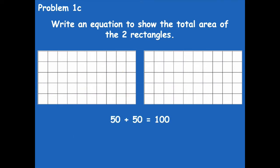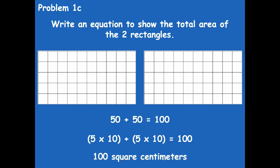You could come up with 50 plus 50, because the first rectangle we found the area for was 50 square units, so you could just double that. You also could write two multiplication facts and add them together: 5 times 10 plus 5 times 10, which gives us 100. The total area of the two rectangles is 100 square centimeters. Remember, you have to include the unit — square centimeters — because when you're finding area you're finding the square area. Don't just label it as 100 or 100 centimeters; it's 100 square centimeters.